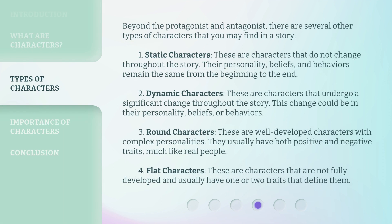Beyond the protagonist and antagonist, there are several other types of characters that you may find in a story. 1. Static characters — these are characters that do not change throughout the story; their personality, beliefs, and behaviors remain the same from the beginning to the end. 2. Dynamic characters — these are characters that undergo a significant change throughout the story; this change could be in their personality, beliefs, or behaviors.